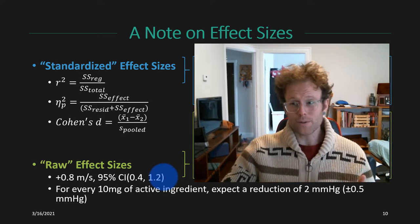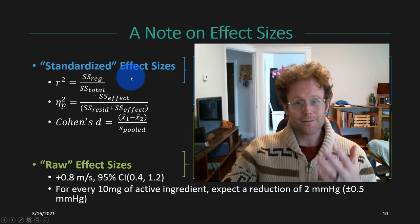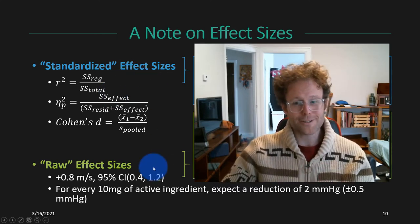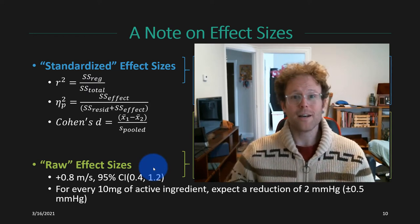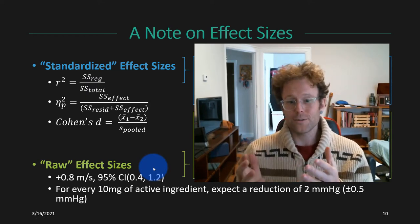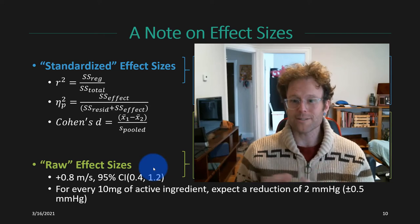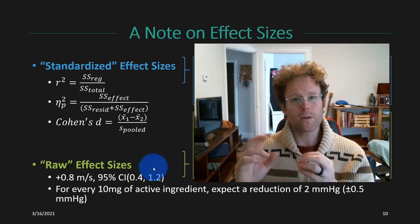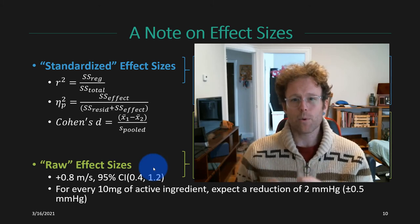In general, as researchers you'll find situations where you prefer a standardized effect size — for instance, doing a power calculation — and other situations where you prefer a raw effect size, such as demonstrating you've achieved some minimal clinically important difference. Being able to work with both and translate between the two is an important skill moving forward.